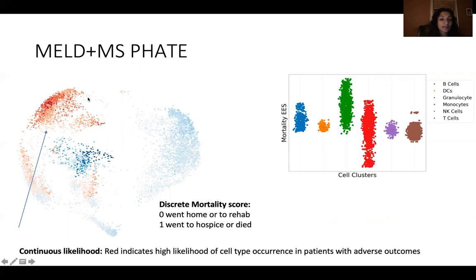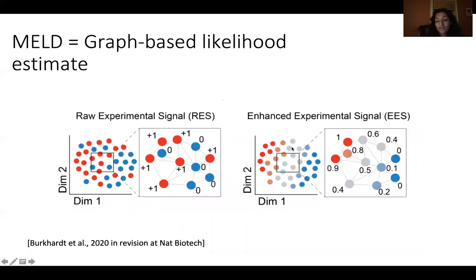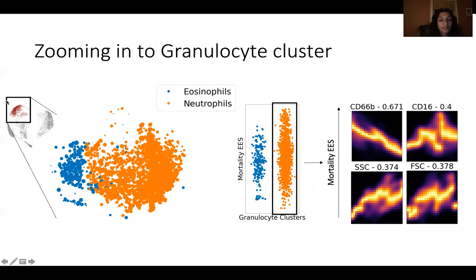In order to gain predictive insight from this, we combine this multiscale method with a method called MELD. MELD basically involves initially coloring each of these cells by the status of the patient the cell came from — whether the patient went home, to rehab, to hospice, or died, which is shown in red. But instead of just coloring by those binary colors, it creates a local neighborhood density estimate. This is done using a cell-cell affinity graph, where you smooth the value along the neighbors, which creates a density estimate called the EES, or enhanced experimental signal.